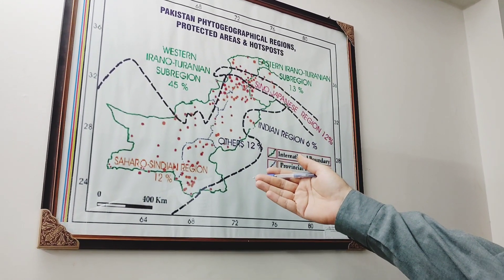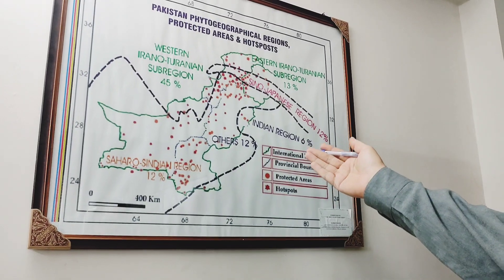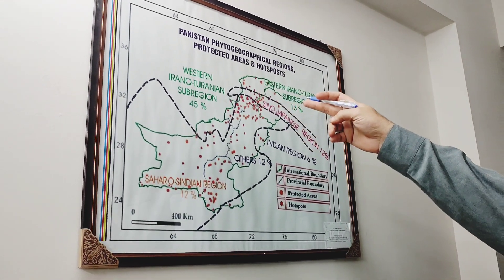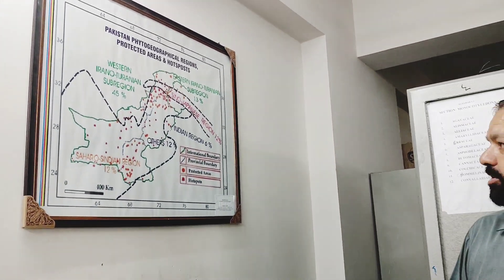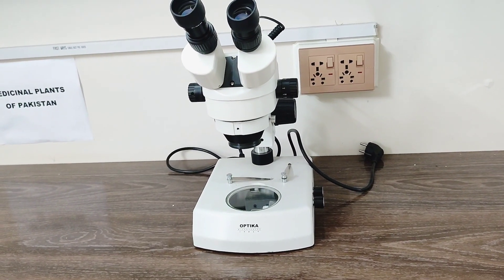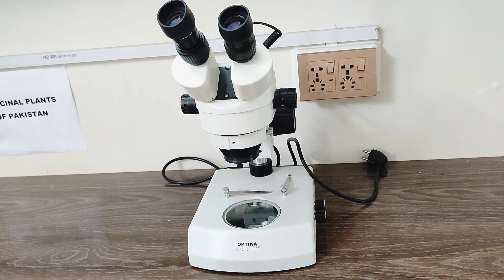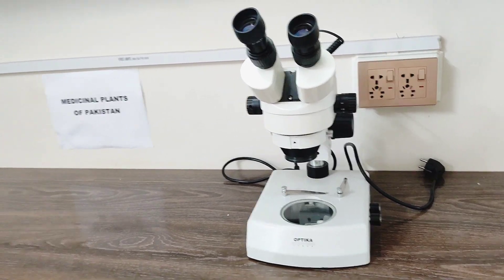So the major region is the western Irano-Turanian region. This is the optical light microscope that is used for the study of morphological characters of plant specimens.